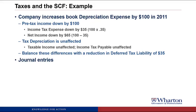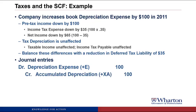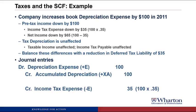The journal entries for these changes are: first, we debit depreciation expense for $100 to recognize the increase in depreciation expense, and we credit accumulated depreciation for $100, because that's where the depreciation expense is stored up over time in that contra asset. Now that we know taxes, we also have to do the tax journal entry. Income tax expense is going down by $35, so we credit income tax expense to reduce the expense by $35 — that's the $100 reduction times 35%. That's balanced off by a debit to deferred tax liability, reducing the liability by $35.